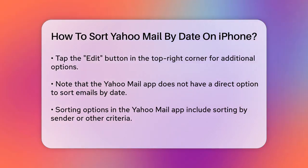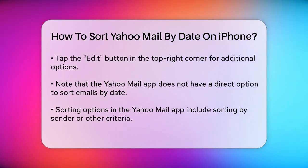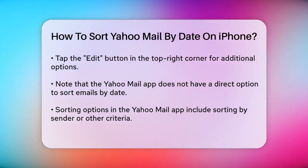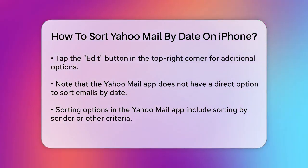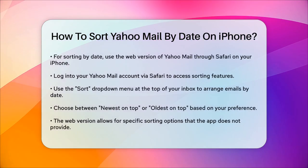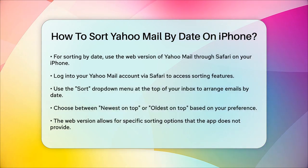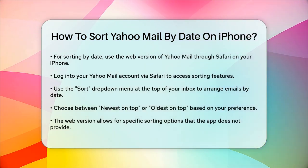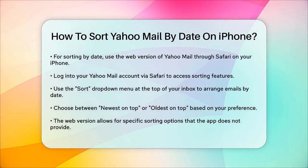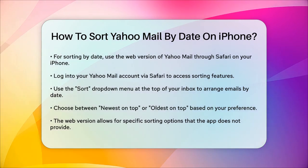If sorting by date is crucial for you, you might want to use the web version of Yahoo Mail through the Safari browser on your iPhone. Open Safari and log into your Yahoo Mail account. Once logged in, you can sort your emails by date using the Sort drop-down menu at the top of your inbox. Click on the Sort drop-down menu and select Date to arrange your emails by the date they were received. You can choose newest on top or oldest on top, depending on your preference. This method gives you the flexibility to sort your emails exactly how you want them.